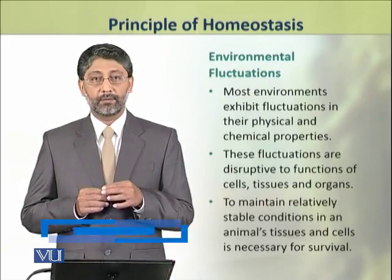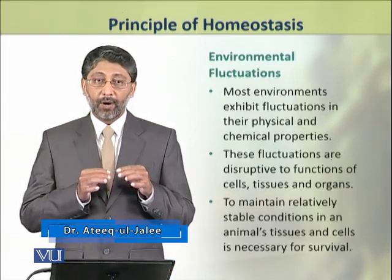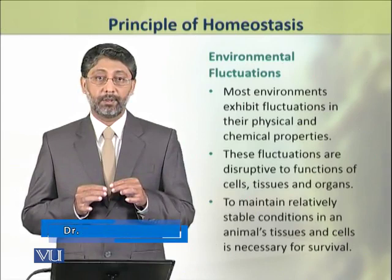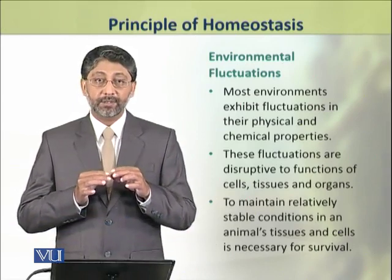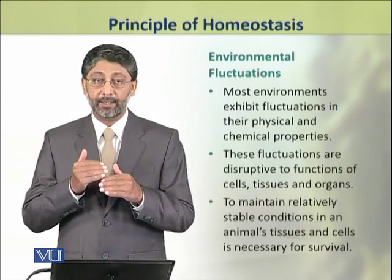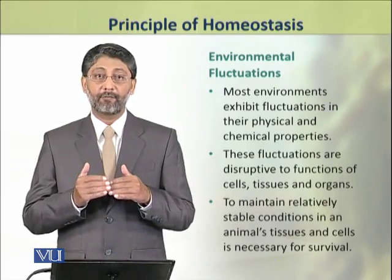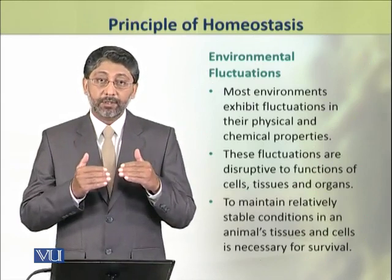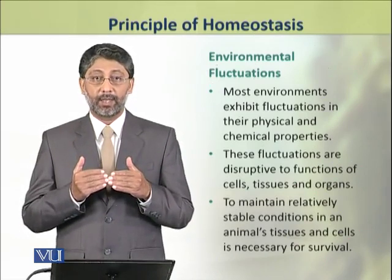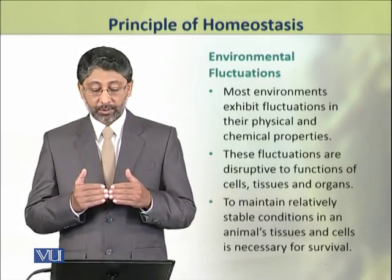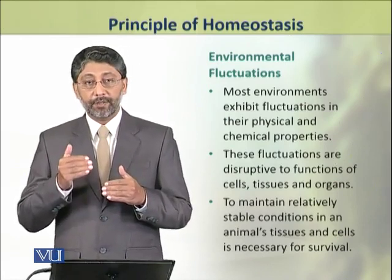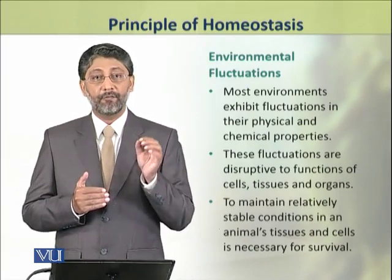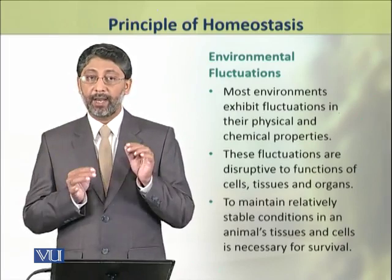Dear students, the environment of an animal has fluctuations in it — environment is not constant. Temperature changes, water availability changes, and air can also change the concentration of oxygen. Such fluctuations in physical and chemical properties of the environment are actually very hostile to the living cells and their systems.